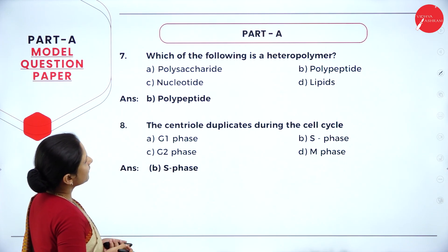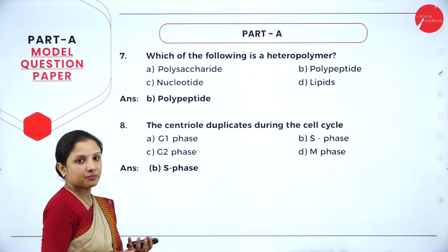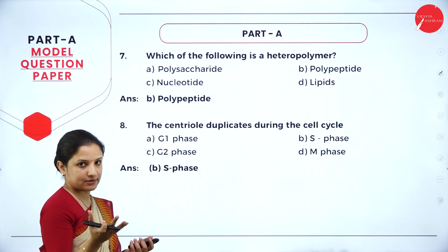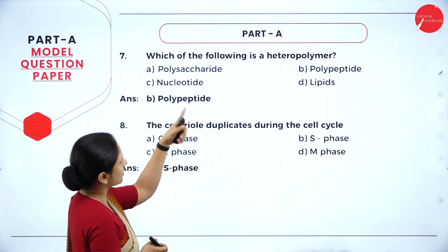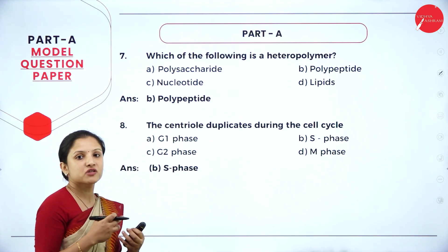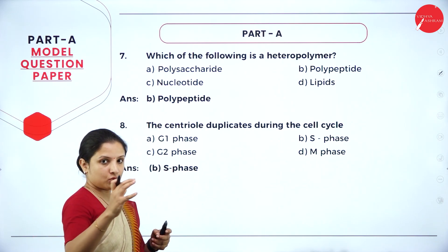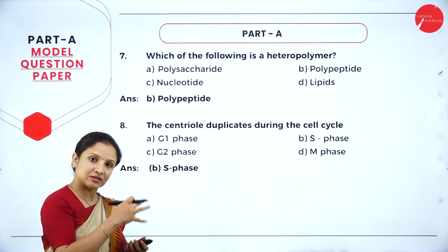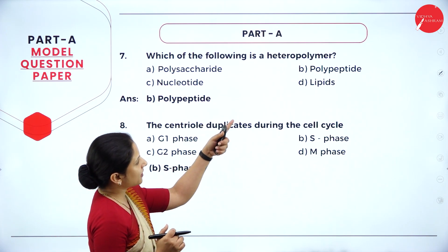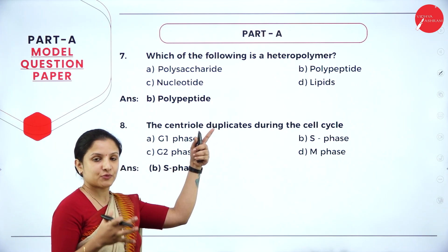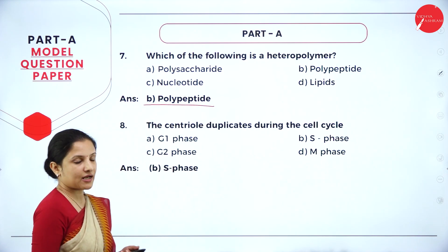Question 7: which of the following is a heteropolymer — polysaccharide, polypeptide, nucleotide, or lipids? Heteropolymers are made up of chains of different units. Polysaccharides, nucleotides, and lipids are all made up of chains of the same monomer units. Polypeptides (proteins) are made up of chains of different amino acids, making them heteropolymers. Option B is the right answer.